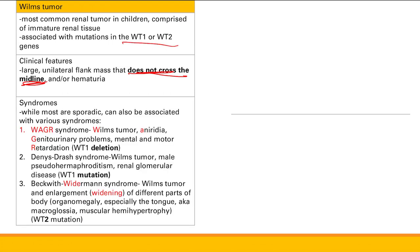Most Wilms tumors are sporadic, but they can be associated with various syndromes. First is WAGR syndrome: Wilms tumor, aniridia, genitourinary problems, and mental and motor retardation. Next is Denys-Drash syndrome: Wilms tumor, male pseudohermaphroditism, and renal glomerular disease. WAGR is from WT1 deletion; Denys-Drash is from WT1 mutation.